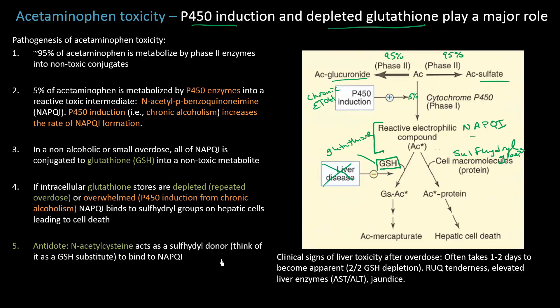These points are high-yield. Before we finish, let's cover the clinical signs of liver toxicity after an overdose. Unless it's a very large overdose, you don't see these signs immediately — it takes one to two days for them to become apparent, because during this time glutathione stores are being depleted. Once depleted, you'll see right upper quadrant tenderness (where the liver is), elevated liver enzymes such as AST and ALT as hepatic cells die, and jaundice because the liver can no longer clear bilirubin. This is acetaminophen toxicity — an incredibly high-yield and important topic.